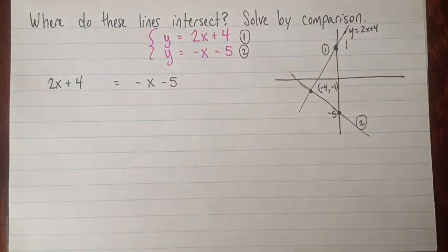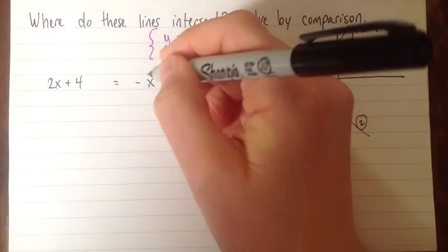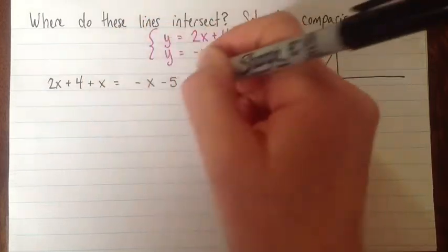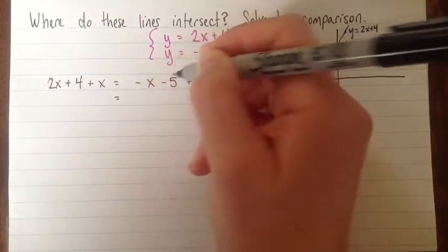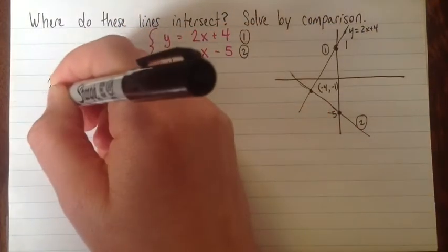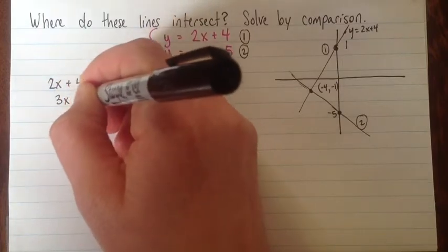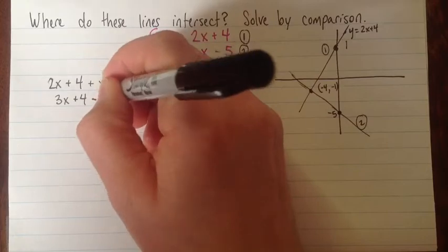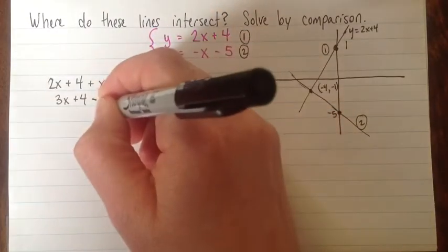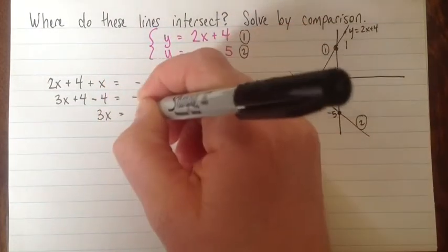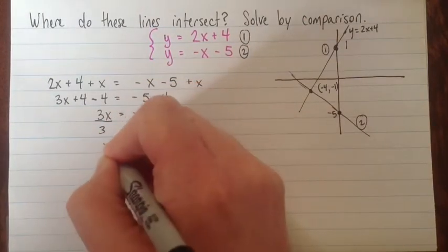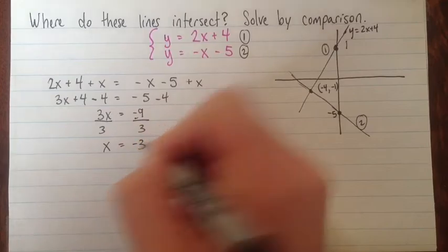And now I just have a linear equation in one variable to solve. So I'll just rearrange this until I get x equals something. Probably I'll add x to both sides. So this on the right-hand side just gives me negative 5. And over here I have 3x plus 4. And then I'll subtract 4 from both sides. So I have 3x equals negative 9. Divide both sides by 3. x equals negative 3.